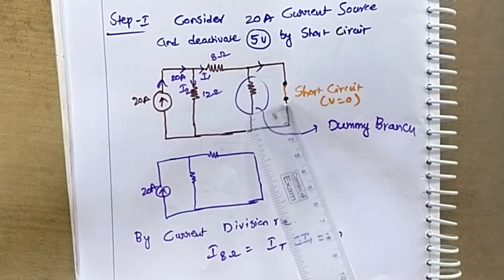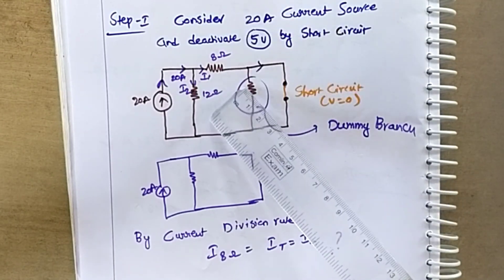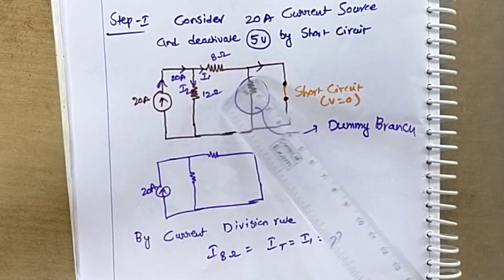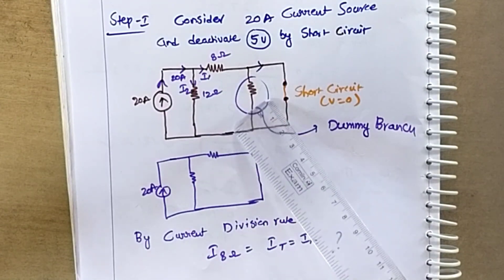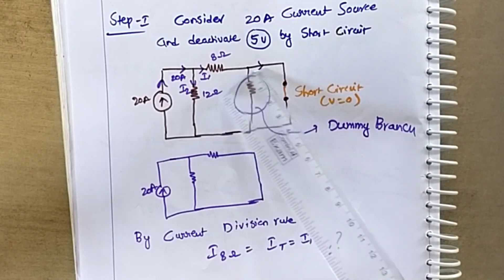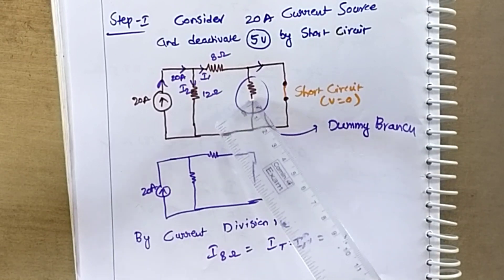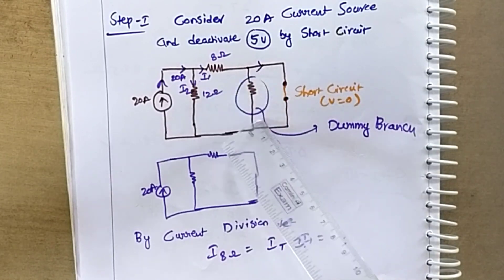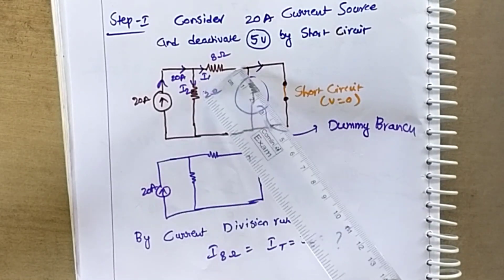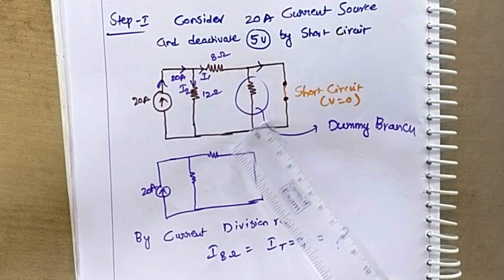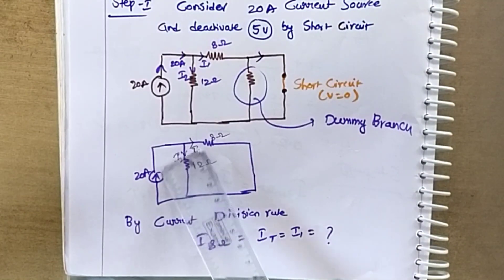Since the 5 volt source is short circuited, the current will choose the low resistance path. The 30 ohm resistance has a higher resistance, so current will not flow through it — it becomes a dummy branch with no current. We can therefore neglect the 30 ohm branch and simplify the circuit accordingly.